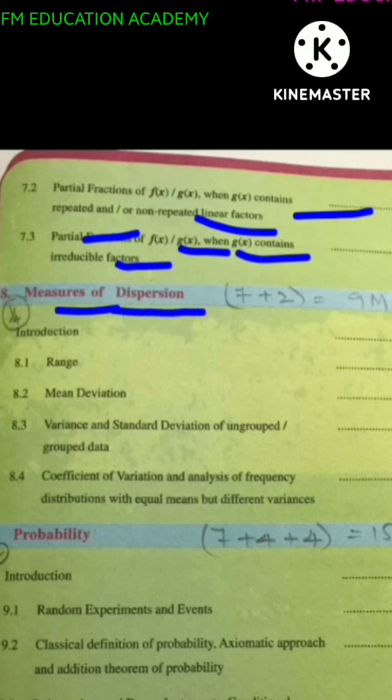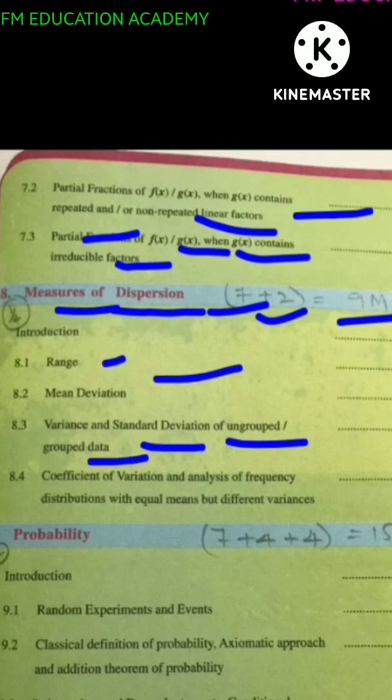Chapter 8, measures of dispersion. 7 mark question plus 2 mark question, that is, 9 marks question will come from this chapter. Range, mean deviation, variance and standard deviation of ungrouped data or grouped data, coefficient of variation and analysis of frequency distributions with equal means but different variances.